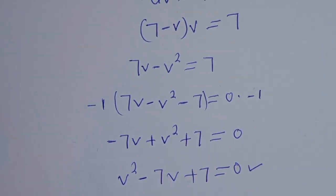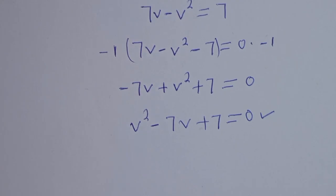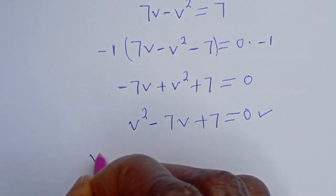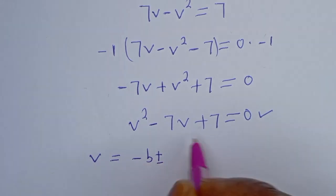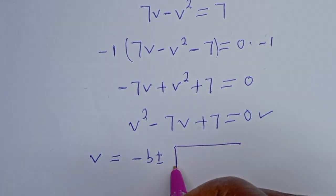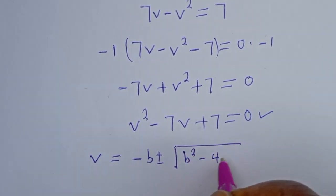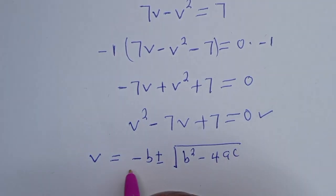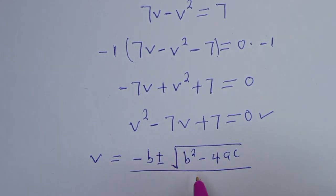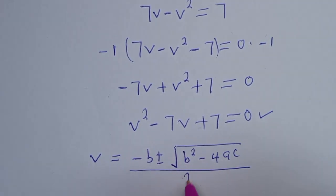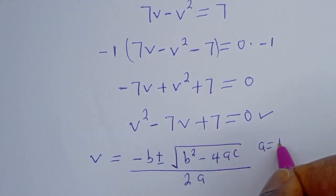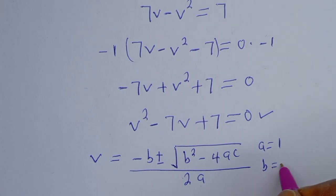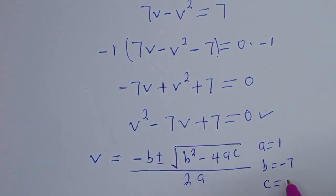This is a quadratic equation. Let's solve this using the quadratic general formula. From the quadratic general formula, v equals minus b plus or minus square root of b squared minus 4ac, all over 2a. From this equation, a is equal to 1, b is equal to minus 7, and c is equal to 7.